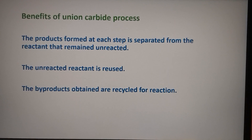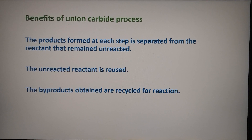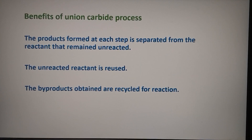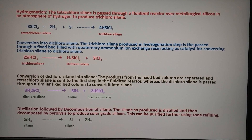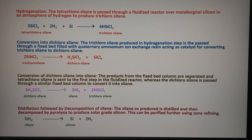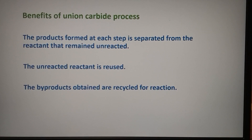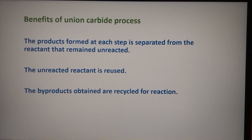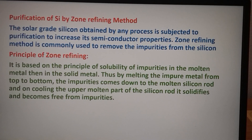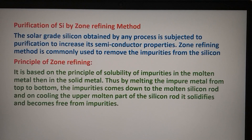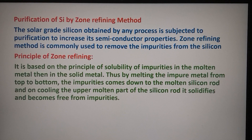The benefits of the Union Carbide process are that the products formed at each step are separated from the unreacted reactant and sent back to the previous steps to be reused. The by-products obtained are also recycled for the reaction, as the hydrogen produced in the last step is used in the first step to produce an atmosphere of hydrogen. Nothing is wasted and therefore it is a widely accepted process. After getting the silicon, it is refined. Whatever process has been used, it should be purified to get solar-grade silicon — that is, a very high-purity silicon to be used in PV cells.